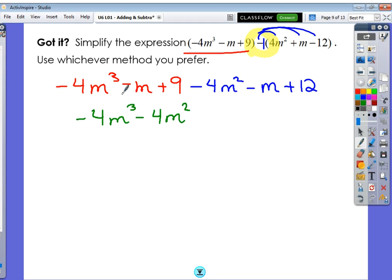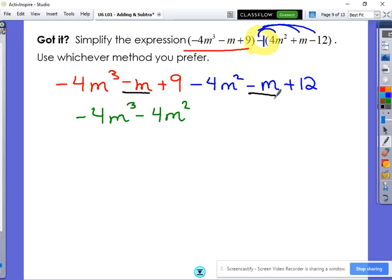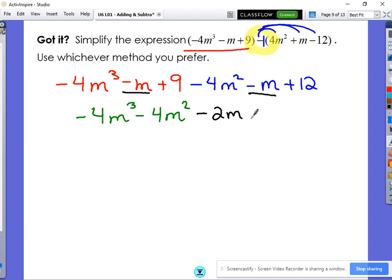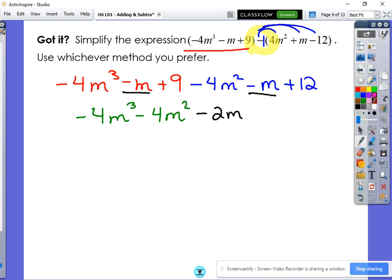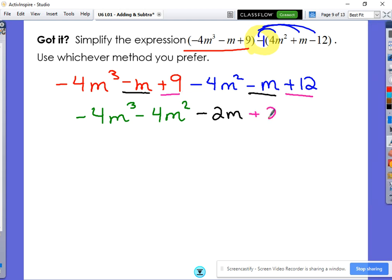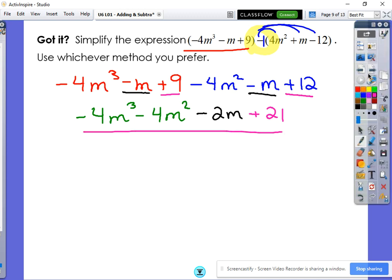Next, we can combine negative m and negative m. It gives me negative 2m. And then we also can combine positive 9, positive 12. That gives me positive 21. There you go. That's what you should have gotten as your answer for that question. Let's keep rolling.